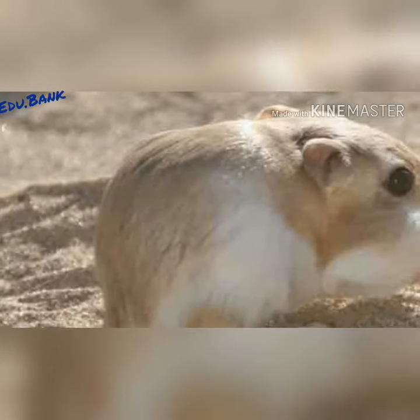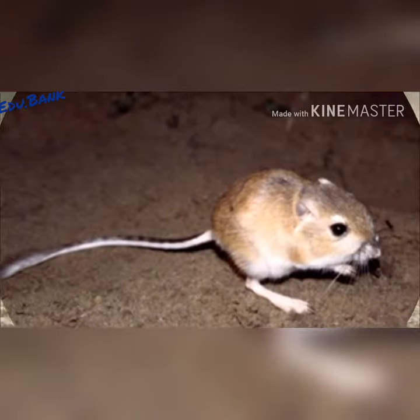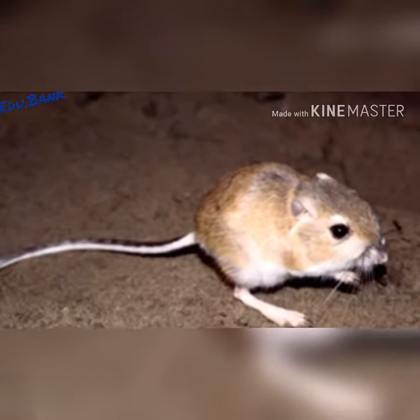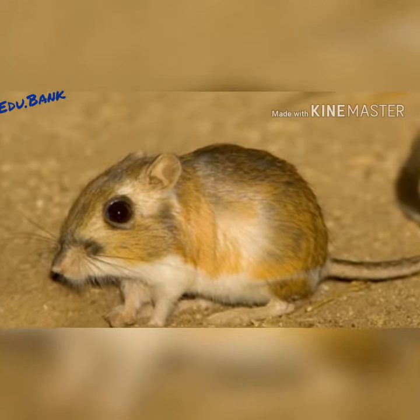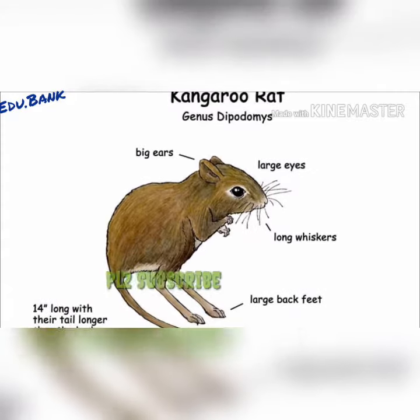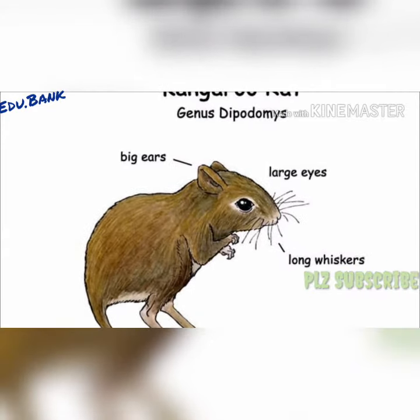They are either light brown or gray in color with a mostly white underbelly. They have small front legs and large hind legs with four toes, very long tails, and large heads with small eyes and ears. They are able to store food for long periods of time in their cheek pouch.